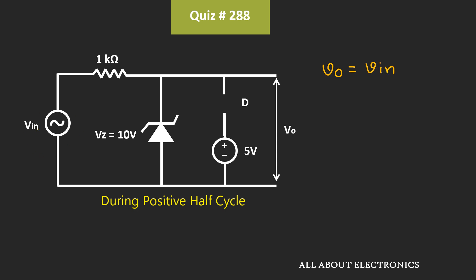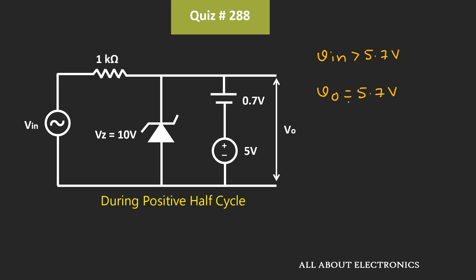Once the input voltage crosses 5.7V, this diode D will start conducting, and the voltage across the diode will be equal to 0.7V. That means whenever the input voltage is greater than 5.7V, the output voltage Vout is equal to 5.7V. And the same voltage will also appear across this Zener diode, so even if the input voltage increases beyond 5.7V, the output voltage will remain 5.7V.